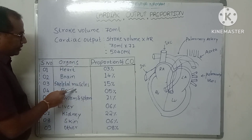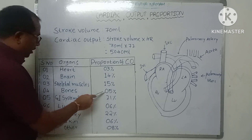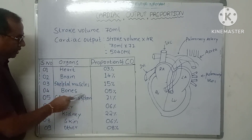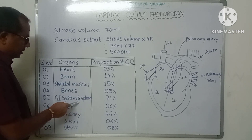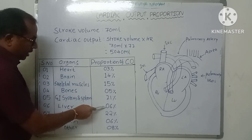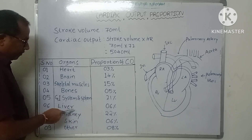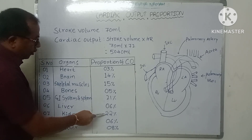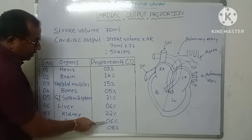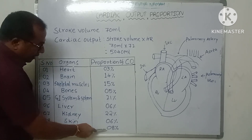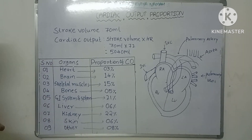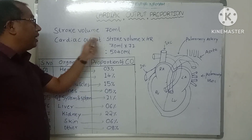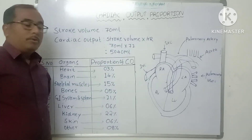15 percent of cardiac output perfusion goes to the skeletal muscles, 5 percent goes to the liver, and 22 percent of cardiac output goes for perfusion to the kidney. 6 percent of cardiac output goes to the perfusion of the skin, and the remaining 8 percent goes to other parts.